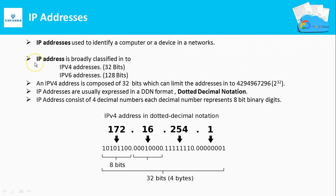IP addresses are of two versions: IPv4 and IPv6. IPv4 is composed of 32 bits and IPv6 is composed of 128 bits. IP addresses are usually expressed in DDN — dotted decimal notation. An IPv4 address is composed of 32 bits and can have a maximum of 2 to the power of 32 addresses.